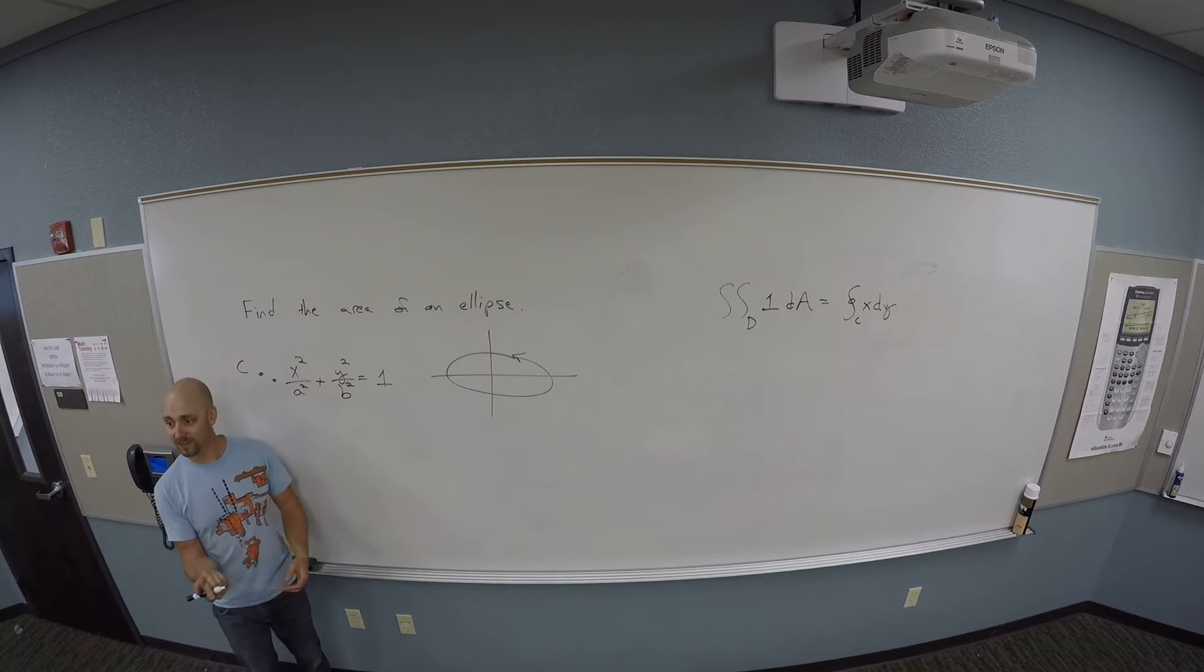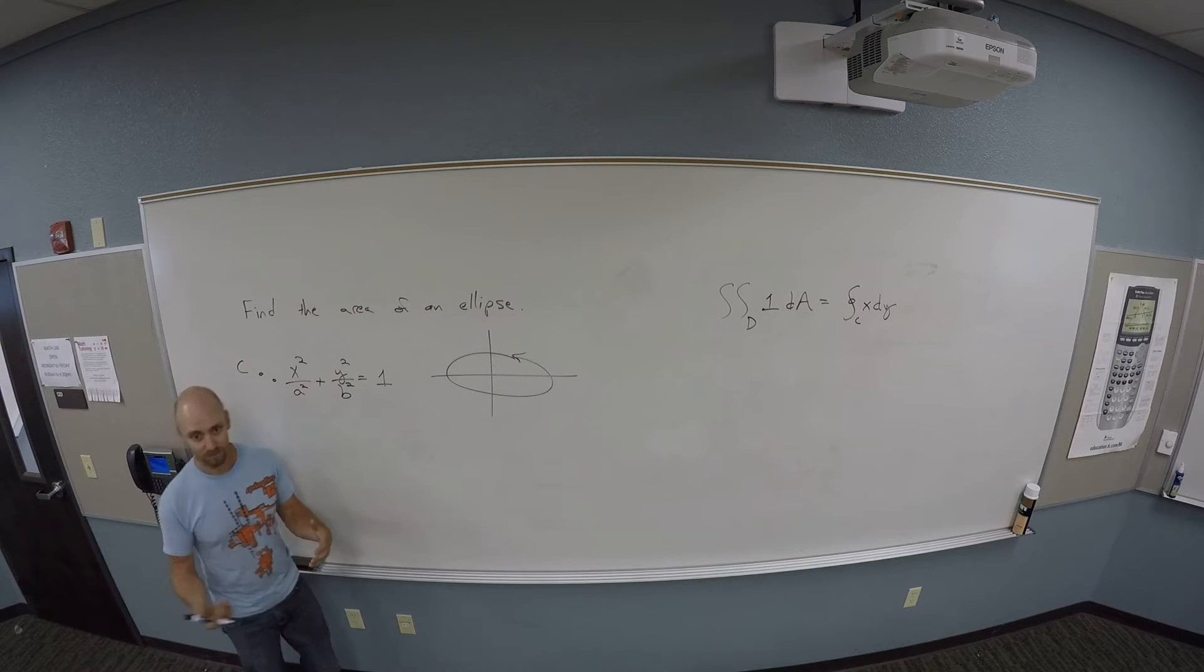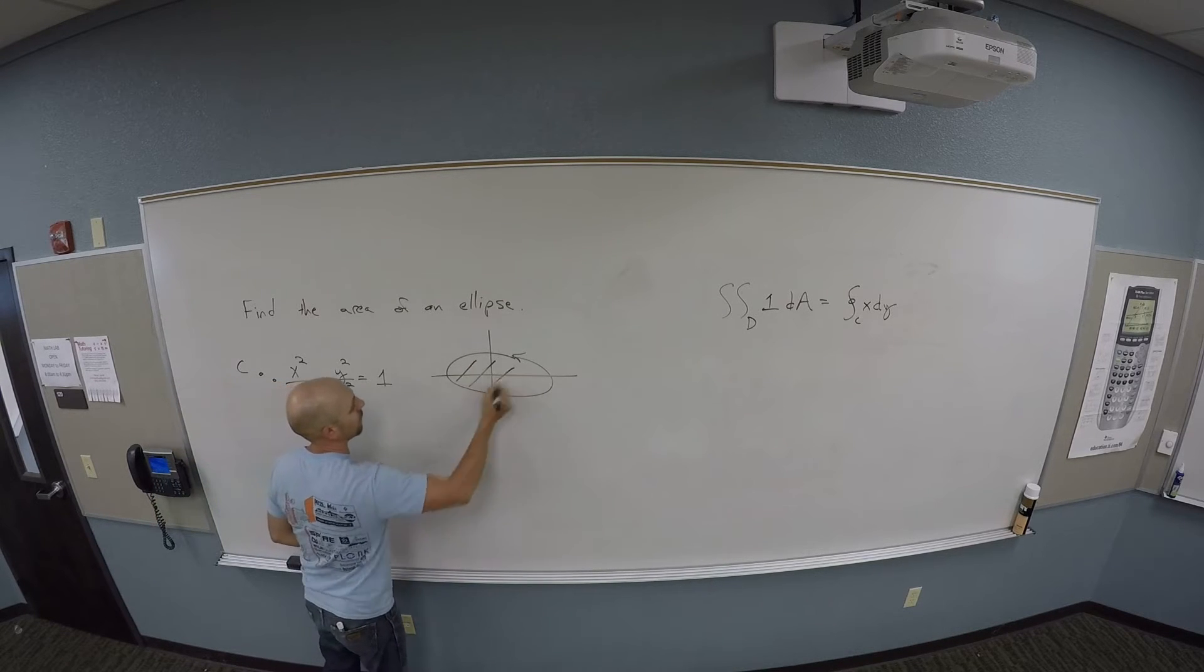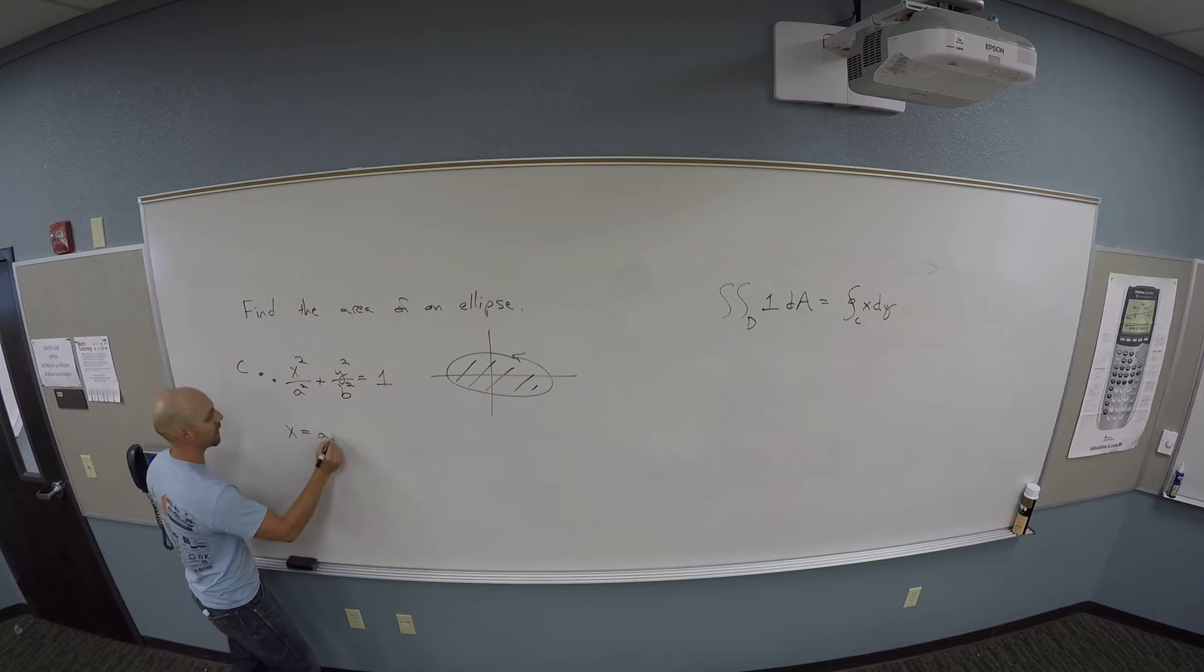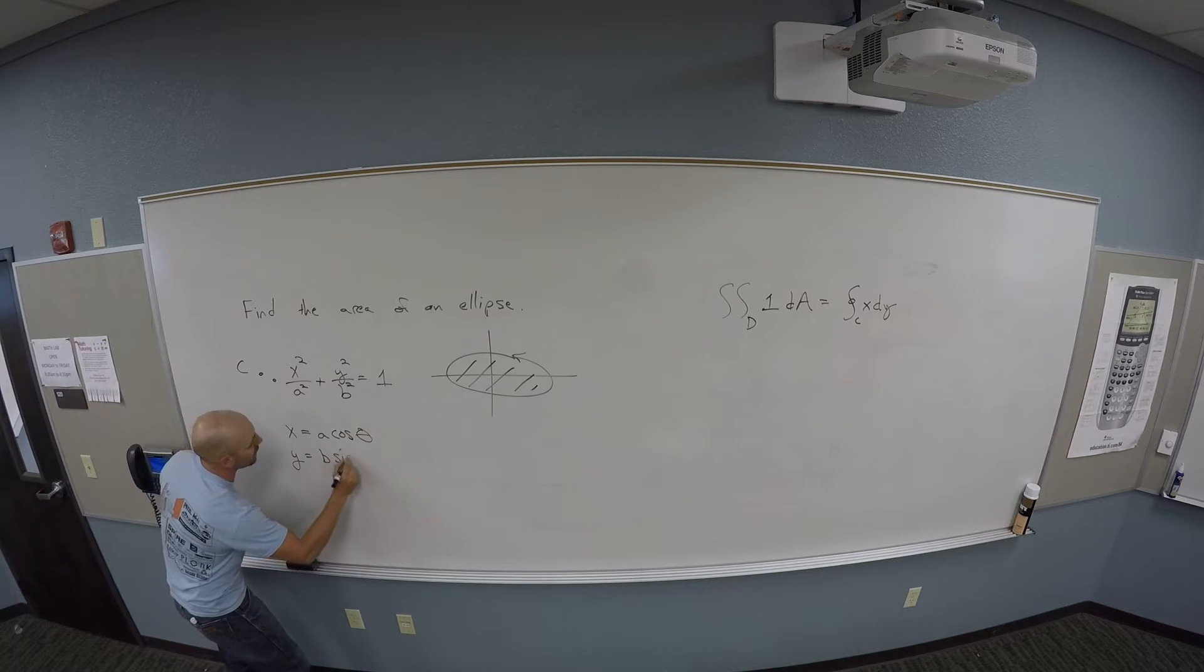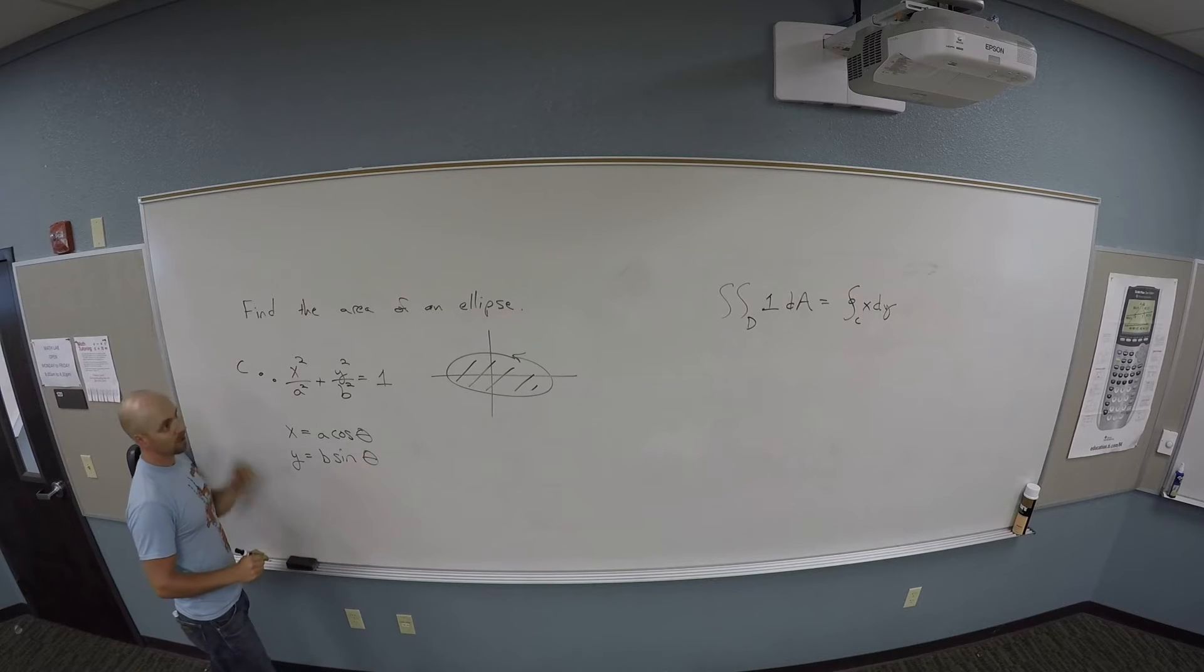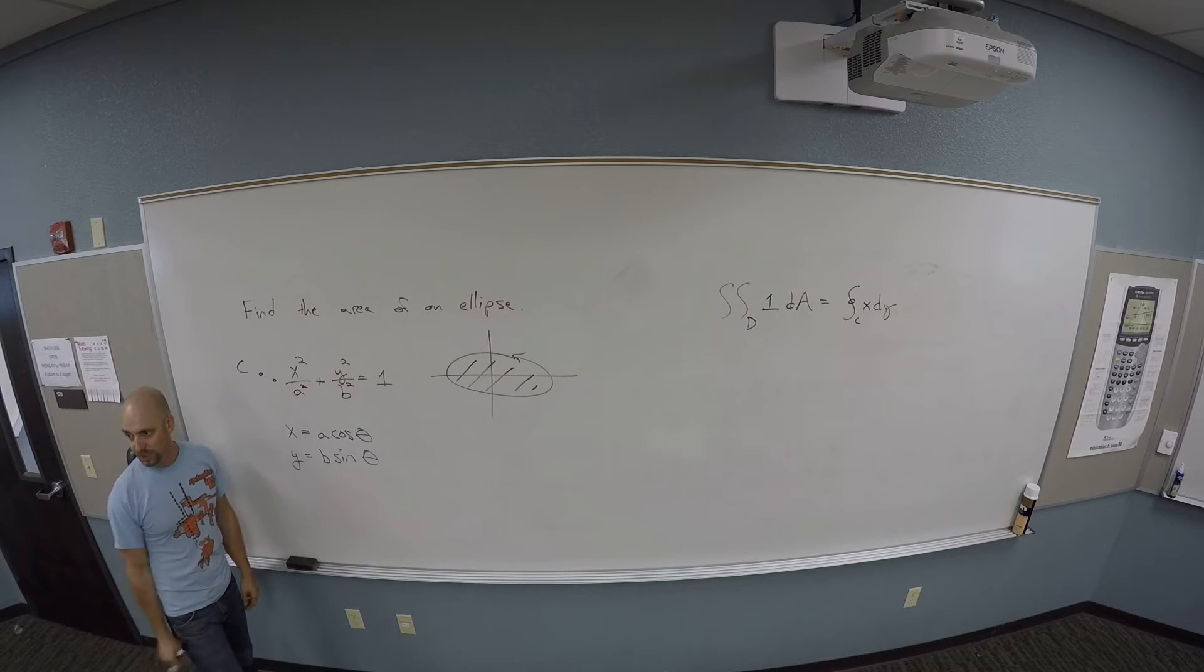If I orient it negatively, Green's theorem will still kind of work, but it'll give me a negative number. So the x coordinate is a cosine theta, and y is b sine theta. We're not working with three dimensions, so I don't have a z, so z is zero in this case.